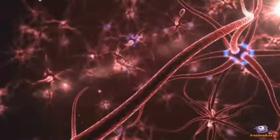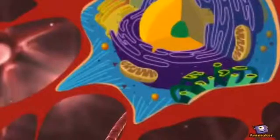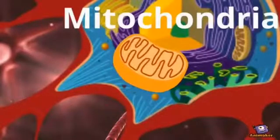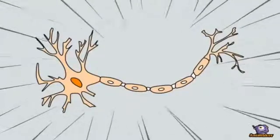Some inherited forms of early onset Parkinson's disease have typically been blamed on poorly functioning mitochondria. Without reliable sources of energy, neurons wither and die.